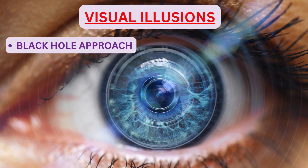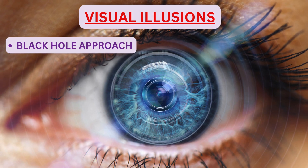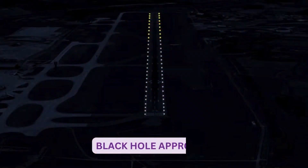Black hole approach — the black hole illusion is produced during night landings when there are no references along the approach path except for runway lights. The pilot feels that he is high on approach, tends to correct for it, and finally lands short of the runway. But if he refers to the PAPI, he can identify that he is actually low on approach.